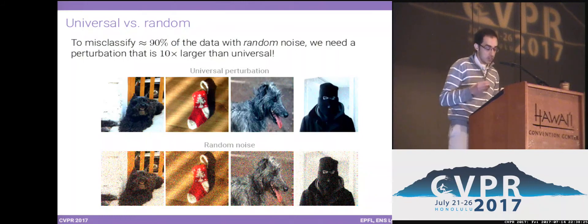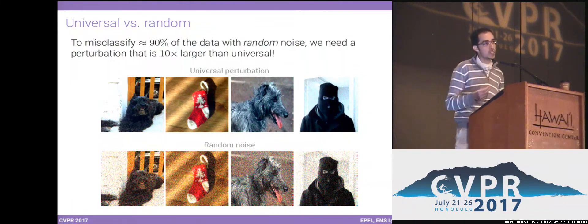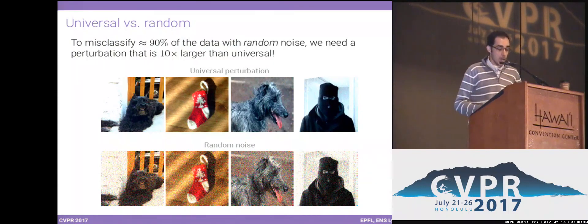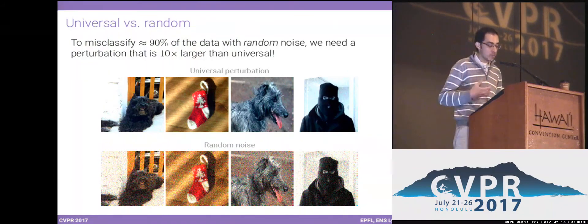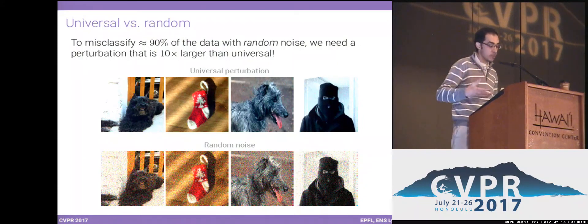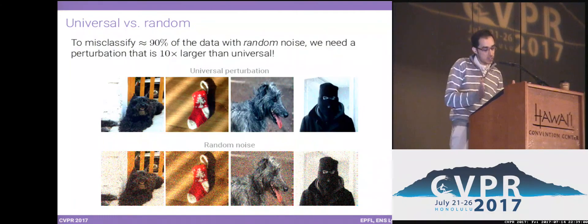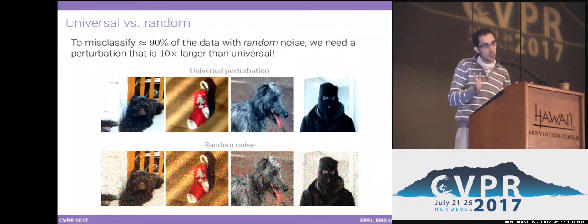Despite the diversity of universal perturbations, they represent very specific directions in the input space — not just random directions. They represent something very specific about the deep neural network that we have yet to understand. To verify this, if we try to craft a random noise with the same fooling properties as a universal perturbation, we would need random noise that is 10 times larger. This shows these directions represent very specific vulnerabilities of the deep network.